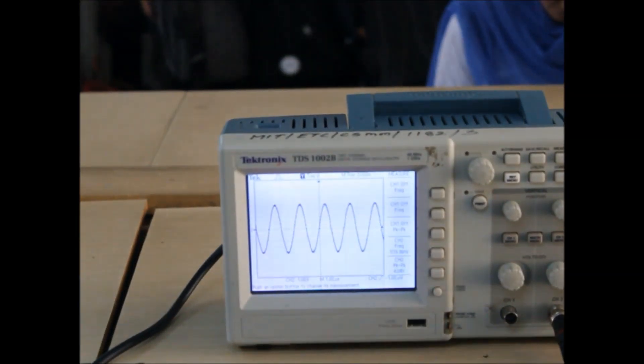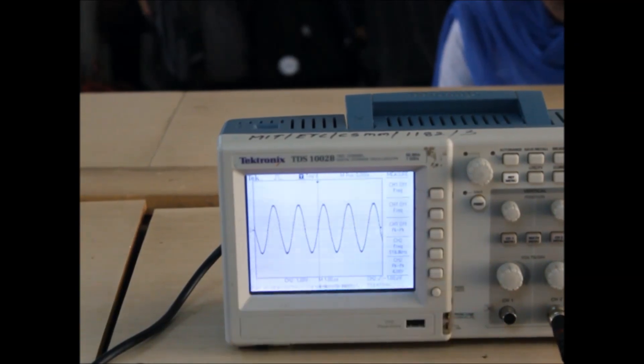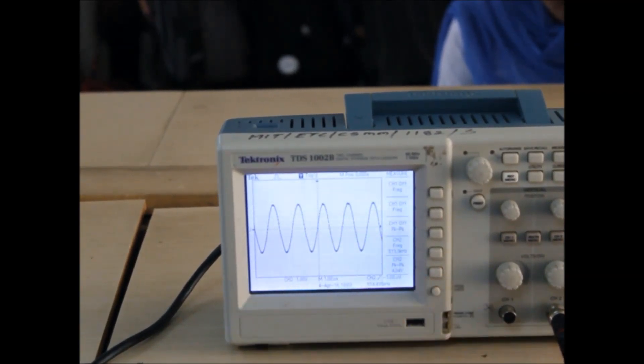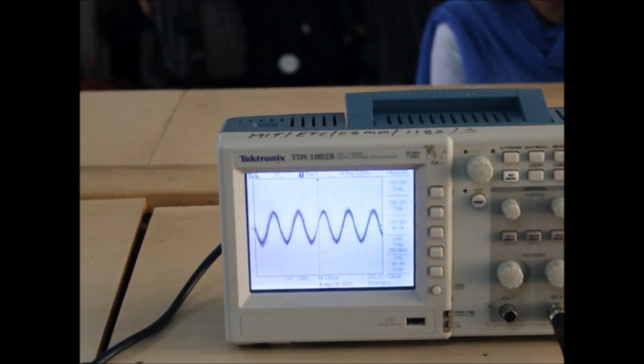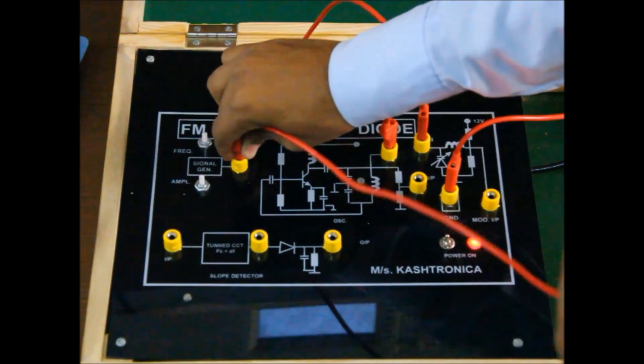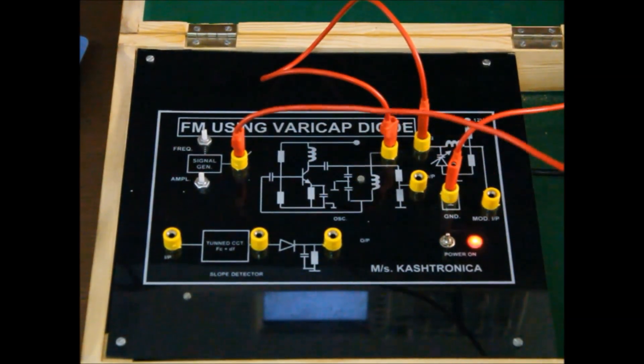As you can see on the DSO, we have channel 2 output to be 512 kHz. This is our carrier frequency generated by the LC tank circuit. We observe the signal generator on the DSO.